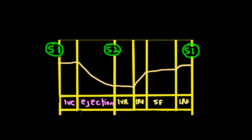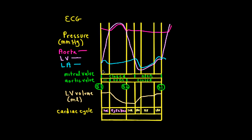Now we can finish up the final components of the Wiggers diagram. We want to put in generally the cardiac cycle. We know isovolumetric contraction and ejection comprise systole, and isovolumetric relaxation and all the filling phases make up diastole — and remember, all that's with respect to the ventricle.